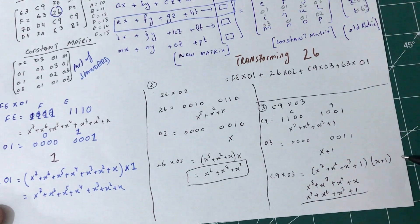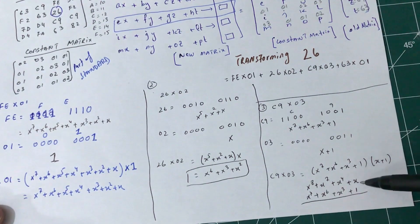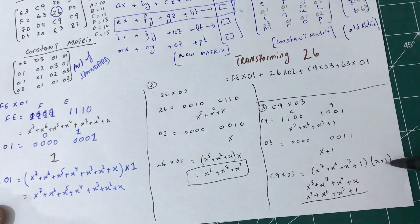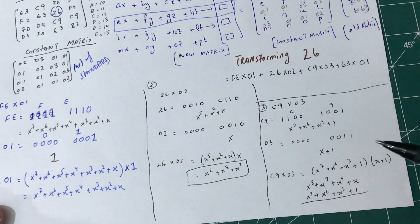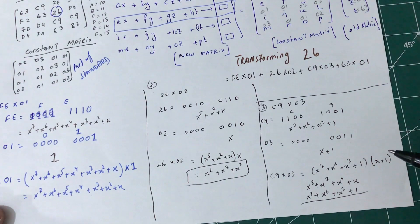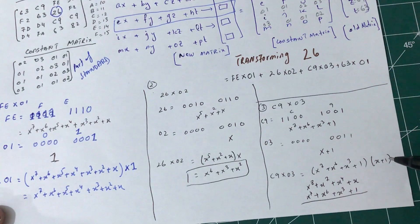In normal math we would just perform the operation as usual. But in Galois field — in AES — we use modulo 2 arithmetic. What we have to do is actually perform modulo 2 arithmetic on these results.